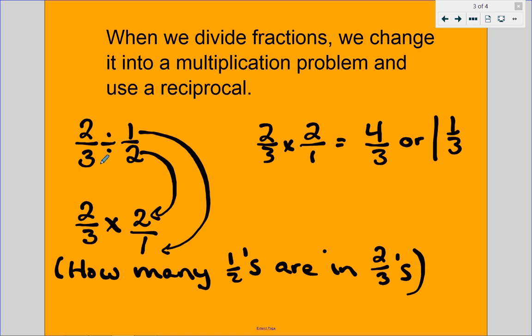The opposite of division is multiplication. So we take the opposite of division, we make it multiplication, we take the opposite of 1 half and we make it 2 over 1. Then we just multiply. 2 times 2 equals 4, 3 times 1 equals 3, so it's 4 thirds or 1 and 1 third.